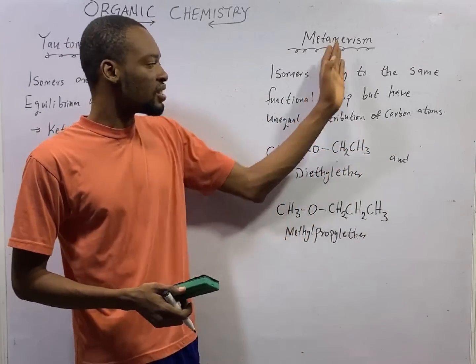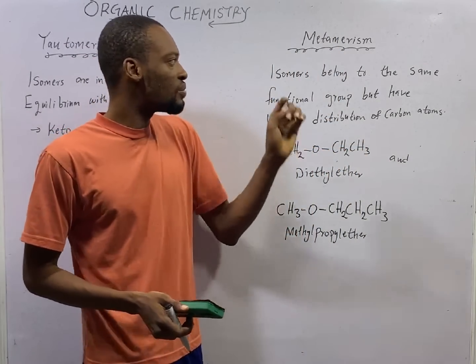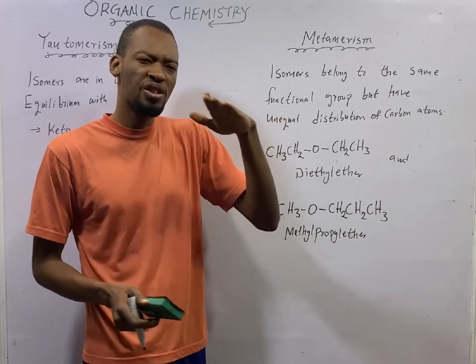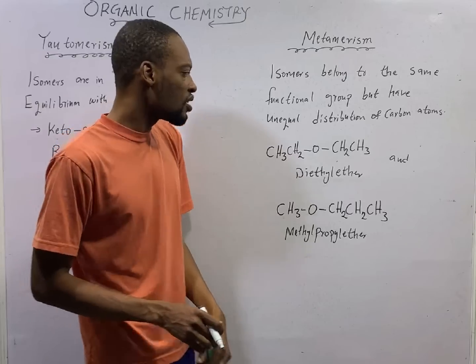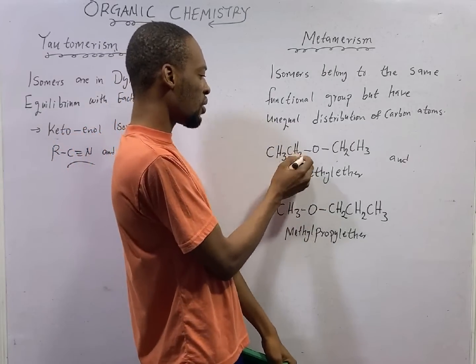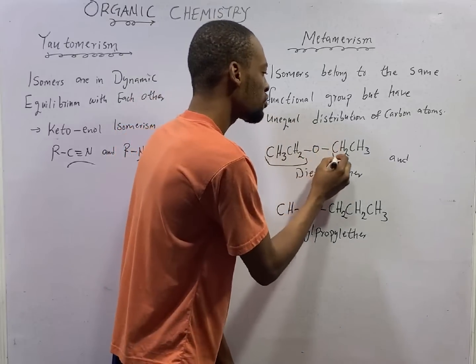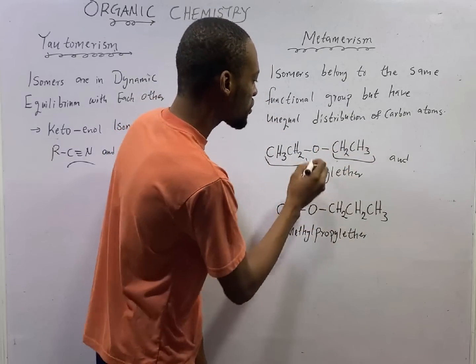While for Metamerism, the isomers belong to the same functional group, but they have unequal distribution of carbon. Look at this. Here you have two carbons towards the left, here you have two carbons towards the right, and the functional group is ether.